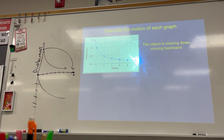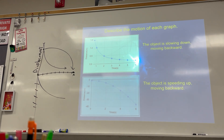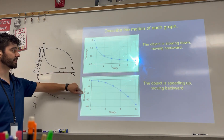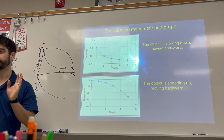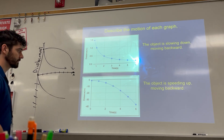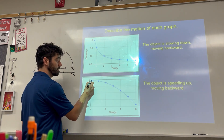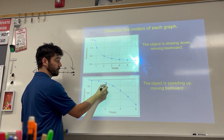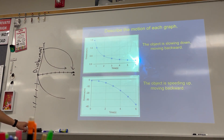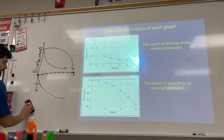The other combination: we can go backwards but speed up, which is going to be the other curved graph. These graphs say distance but they should say displacement — I made these a couple years ago and they were wrong. Here I started at zero, I went backwards, I covered a small distance, then a little more distance, then a little farther, farther, farther, farther every second. So I'm speeding up.